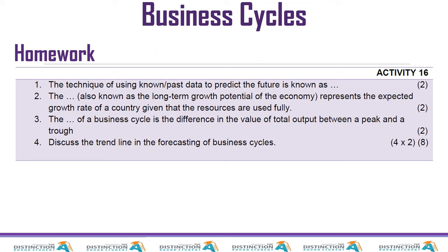This brings us to the end of the lesson. Here is your homework: the technique of using known or past data to predict the future is known as what? The dash represents the expected growth rate of a country given that resources are fully used. The dash of a business cycle is the difference in the value of total output between a peak and a trough. Lastly, discuss the trend line in the forecasting of business cycles. Thank you so much for tuning in and lasting until the end. If you are not subscribed to the channel, please do so, and turn on the notification bell. Let's get those distinctions!